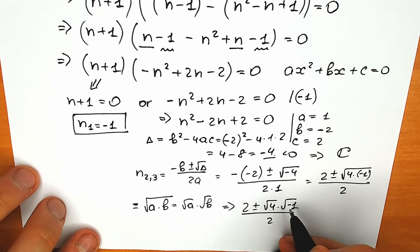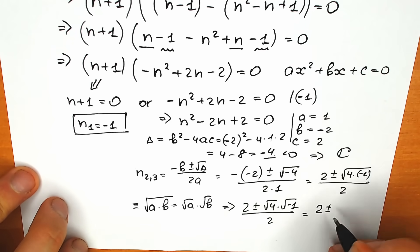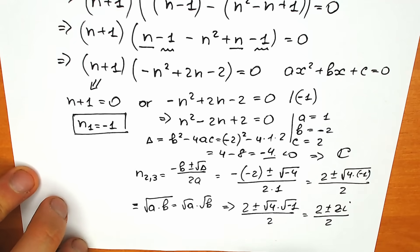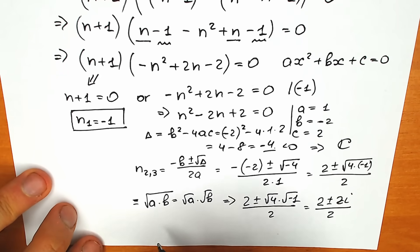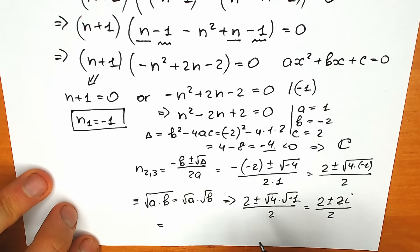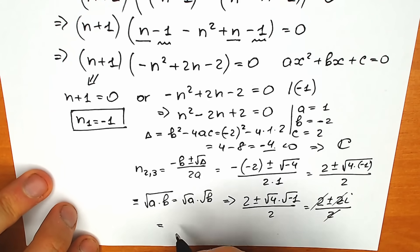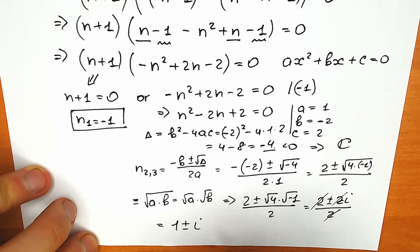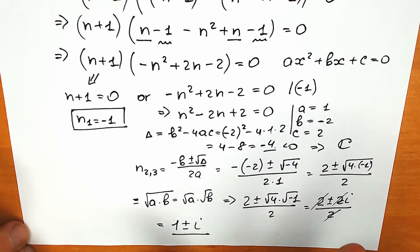Square root of 4 equals 2, and square root of minus 1 equals i, the imaginary unit. So as a result we have 2 plus or minus 2i, over 2. In the last step, we divide the numerator by 2, canceling coefficients. Our final answer is 1 plus or minus i — these are our two complex roots.